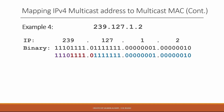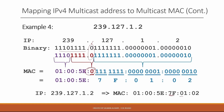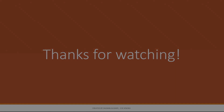Now for 239.127.1.2: 239 in binary is 11101111, and 127 is 01111111, followed by 1 and 2. The first part 01:00:5E is fixed, then the next bit is always zero, and the last 23 bits are used as-is. Comparing with the previous example, we get the same MAC address — 01:00:5E:7F:01:02 — because that high bit is always forced to zero. Thank you for watching.